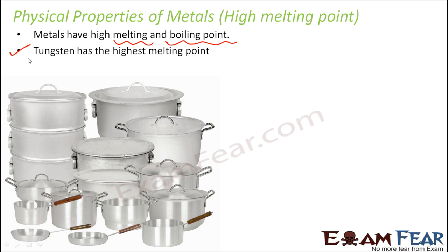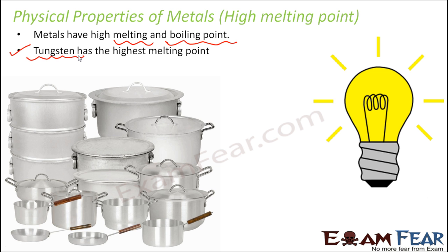The metal with the highest melting point is tungsten, and that is why tungsten is used in the filament of bulbs. When you switch on a bulb, electric current passes through it and produces a huge amount of heat and light energy. If the metal had a low melting point, it would start melting at that high temperature. We need a metal with a very high melting point so that it doesn't melt when the bulb is on, because the temperature inside the bulb is very high. That is the purpose why tungsten has been chosen to make the filament of a bulb.